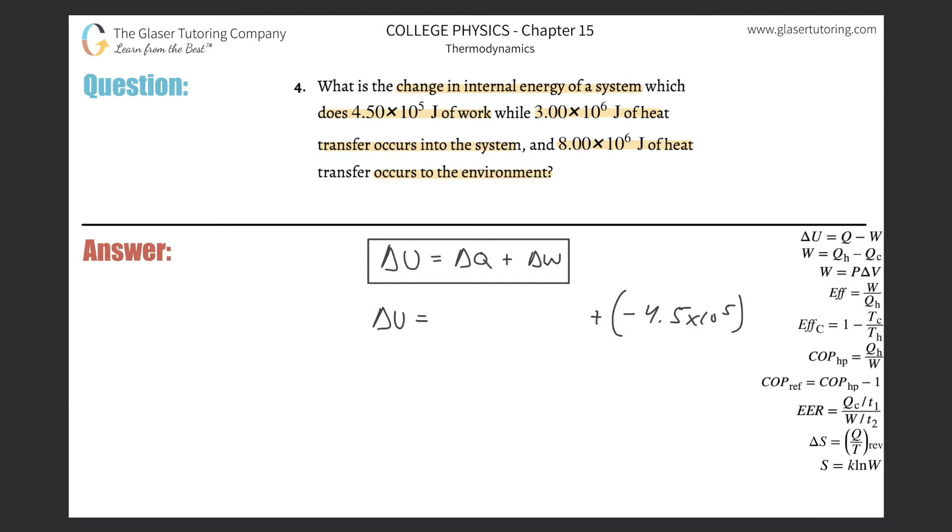Now it says, while at the same time, 3 times 10 to the 6 joules of heat transfer occurs into the system. That means the system is gaining this heat energy. So when I think of my delta Q, I'm going to plug that in as a positive value because it's gaining. Remember, check out number two, I gave you a table. So this is going to be 3.00 times 10 to the 6th.